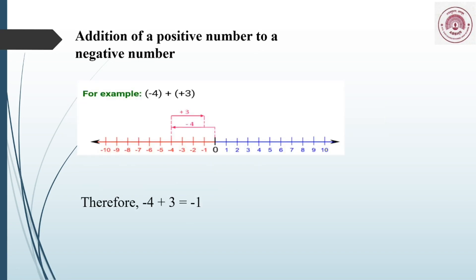Now, addition of a positive number to a negative number. In this case the first number is negative and you are adding a positive number to it. The steps are the same — first we locate minus 4 on the number line. We are adding 3, a positive number, so we move to the right: 1, 2, 3. We reach minus 1, which means minus 4 plus 3 is minus 1.